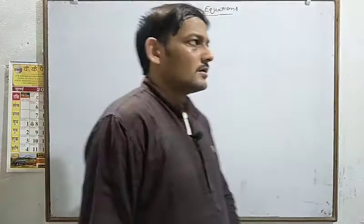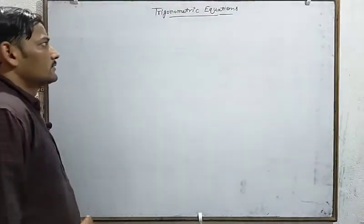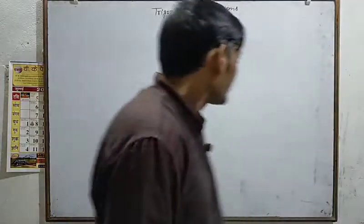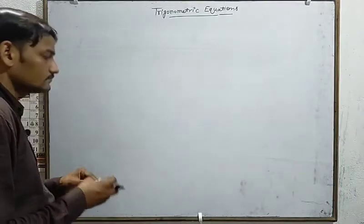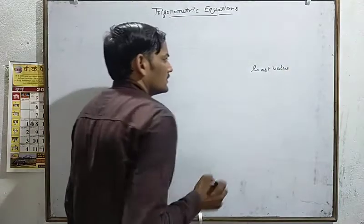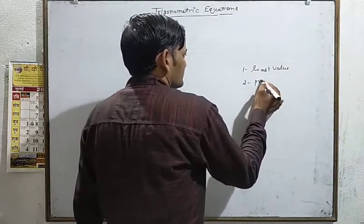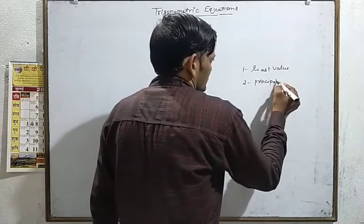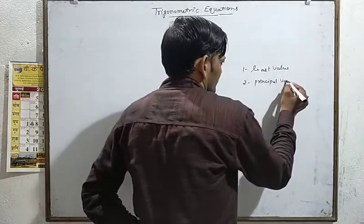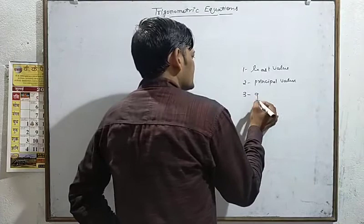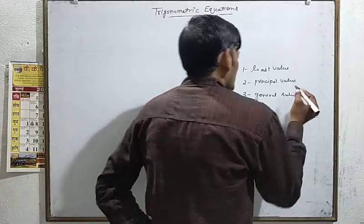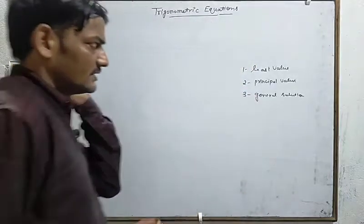Hello students. Now we have to discuss the topic of trigonometric equations. In trigonometric equations, we will discuss three types of values: the least value, the principal value, and the general value (or general solution). So in trigonometric equations, we will discuss these three types of values.